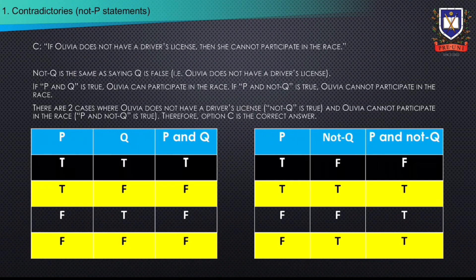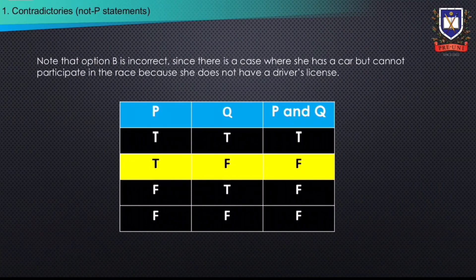Since not Q is true when Q is false, not Q is the same as saying that Q is false. Similarly, if P and Q means that Olivia can participate in the race, then P and not Q means that Olivia cannot participate in the race. A truth table can be drawn using P and not Q as shown. There are two cases where not Q is true, and P and not Q is also true. This means that the statement 'if Olivia does not have a driver's license, then she cannot participate in the race' is true. It's worth noting that if Olivia cannot participate in the race, then it is not necessarily due to her not having a car — she can have a car but not have a driver's license and still not be able to participate.